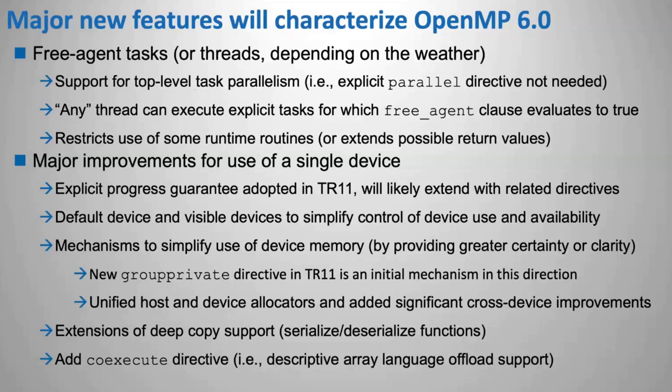We're also making a lot of progress on improvements for use of a single device in the OpenMP device model — some people call it the offload model — where you can call a target region and execute code explicitly on a different device. One of the things we did adopt in TR11 are explicit progress guarantees. Basically, if you have code being executed in two different progress units, you can be assured that that code will make progress even if they're in the same parallel team, no matter where they're being executed. This allows us to do things like recognize thread blocks on GPUs.